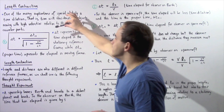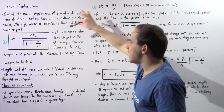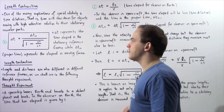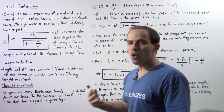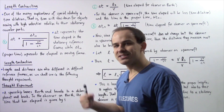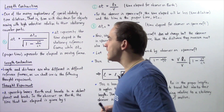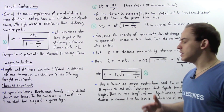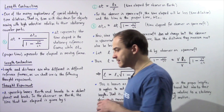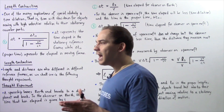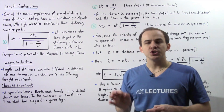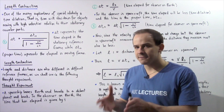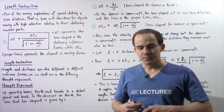Delta t represents the time elapsed in the stationary reference frame, while delta t naught — also known as the proper time — is the time elapsed in the moving reference frame. Basically, time is not an absolute quantity; time is different in different reference frames.